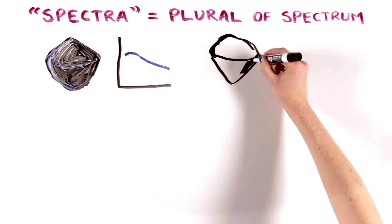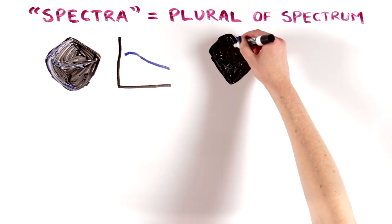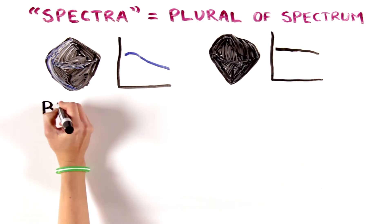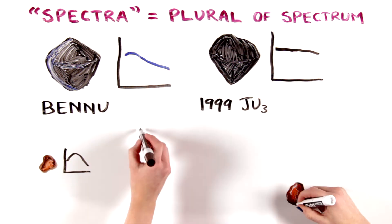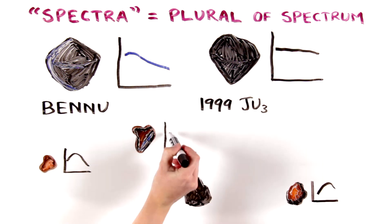Asteroid 1999 JU3, the target of the Japanese Hayabusa 2 mission, has a flat spectrum because it reflects similar amounts of all colors. Other asteroids have a variety of different spectra, telling scientists about the asteroid's history and what they're made of.